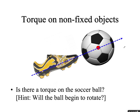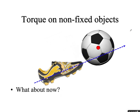Torque on a non-fixed object: if you kick a soccer ball with the force directed right through the center of mass, the r vector has magnitude zero, so there's no torque. The ball just linearly accelerates with no angular acceleration — it won't spin. On the other hand, if you kick off-center, you can find r-perpendicular from the center of mass to the line of action of the force, quickly calculate the torque, and the ball will angularly accelerate and get some spin.